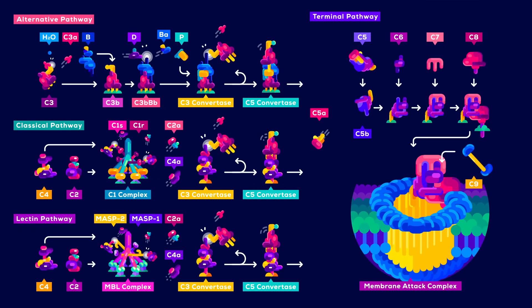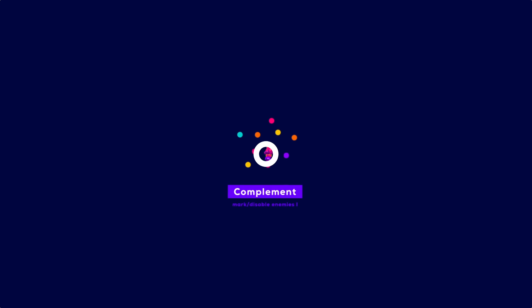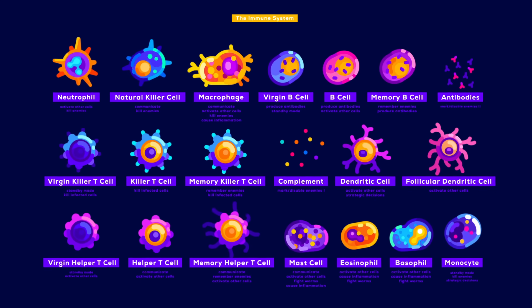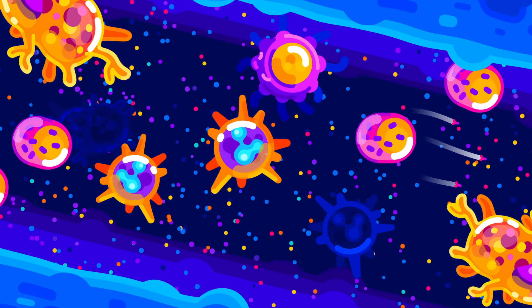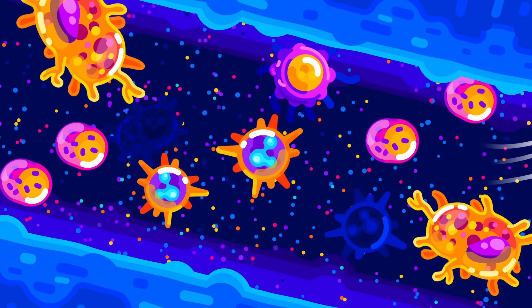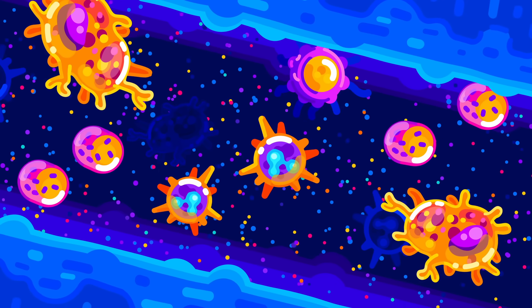So the complement system, while being extremely important, is only one player in the complex and beautiful organization that is our immune system. A beautiful example of how many mindless things can do smart things together.